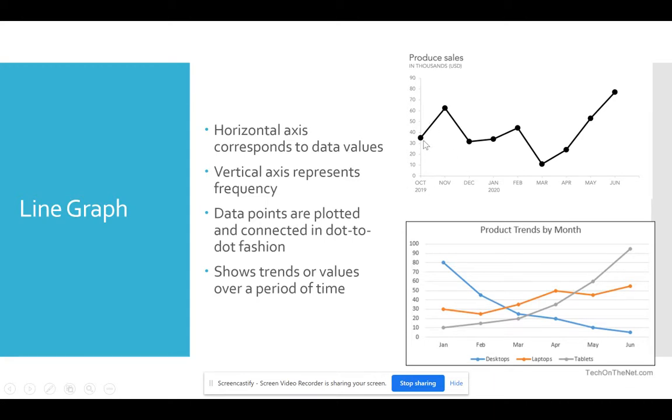Each dot represents a particular data value. So like in October of 2019, we had 35,000 produce sales. In November, we had, say, roughly 60. So you can begin to see, and you can see very quickly, it went up from October to November. Then there was a drop.